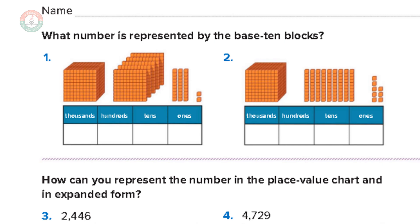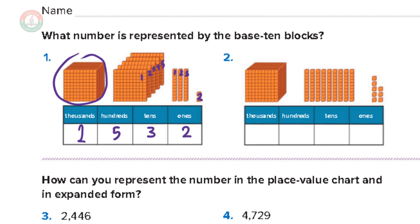Let's look at this — what number is represented by the base-10 blocks? We have one big cube, and we know that this big cube represents thousands, so we have one thousand. Now we have one, two, three, four, five flats — these five flats are five hundreds. Then we have one, two, three rods — three rods are three tens. Then two units — these are two ones. So the number is one thousand five hundred thirty-two.